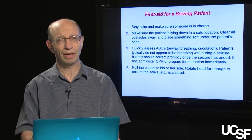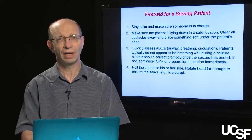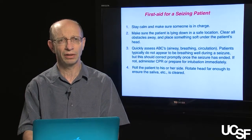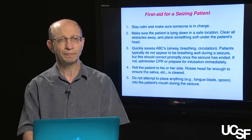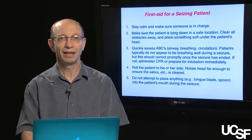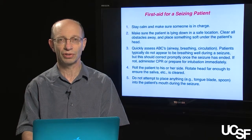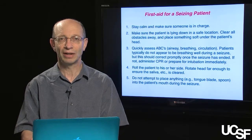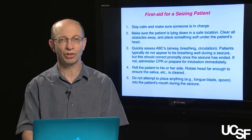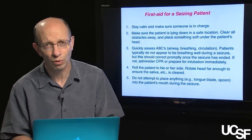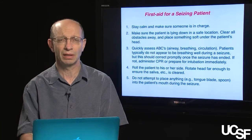As the patient is having their seizure, make sure they're rolled to the side. Move the head to one direction so that saliva can be cleared to try to prevent aspiration. Do not try to place anything in the patient's mouth during a seizure — such as a tongue blade, a spoon, or your finger. Once the patient has clenched down at the beginning of the tonic phase, there's nothing you can do to reverse any potential injury, and you can actually cause additional injury by forcing something into the patient's mouth.